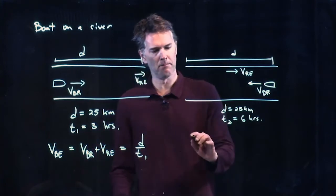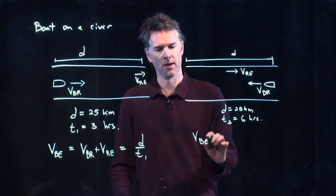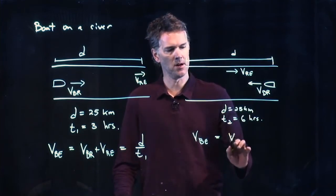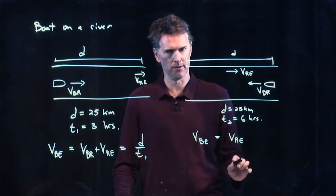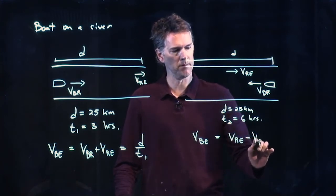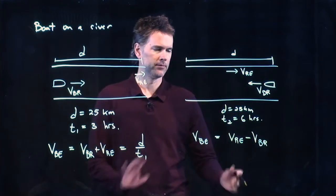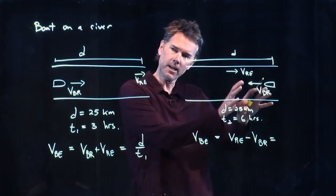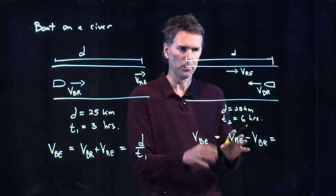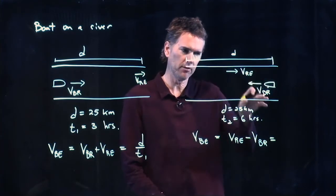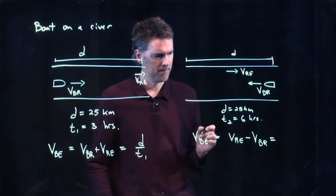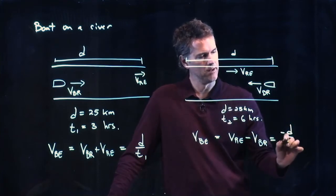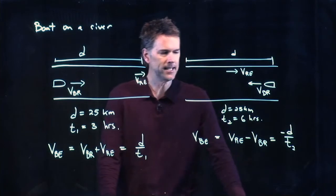So what is the speed of the boat relative to the earth in this case? Well it is V of the river relative to the earth minus V of the boat relative to the river. You can make it positive or negative. But since we're saying stuff to the right is positive then we'll just keep that nomenclature. VRE is to the right so that's positive. VBR is to the left so that's negative. And now we're covering a distance D but we're going back this way. So let's put a negative right there. And how long does it take? Negative D over T2.